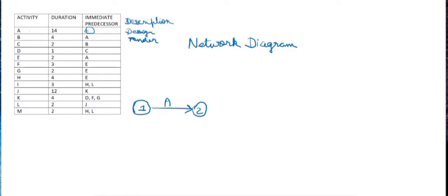Now as we can see here that for activity B the immediate predecessor is activity A, so I'll draw the next arrow that will represent my activity B and here I'll write it as 3.